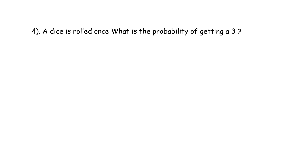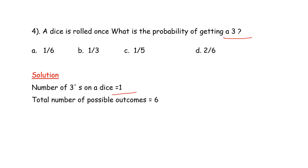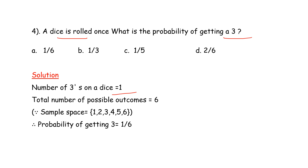Next problem: a dice is rolled once. What is the probability of getting a 3? The number of threes on a dice is 1. The total number of possible outcomes is 6. So the probability of getting a 3 is 1 divided by 6.